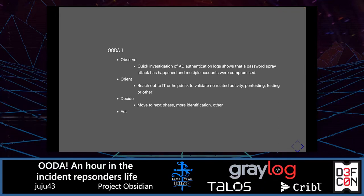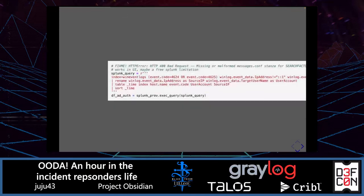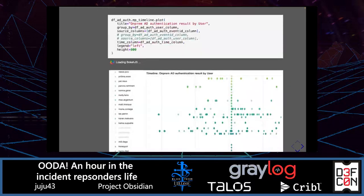After that, we want to decide: do we move to the next phase or do more identification? Let's review how we can do this via the authentication log. As part of our Jupyter notebook, we are using the MysticPy library to do a Splunk query. As an example, we collect successful and failed logon per user account and source IP. If we visualize this data, we have a chart of AD authentication by user.